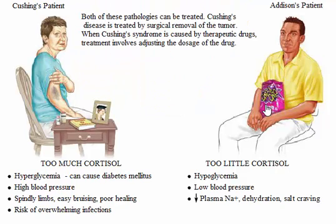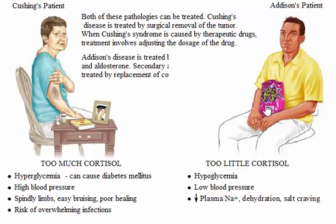Both of these pathologies can be treated. Cushing's disease is treated by surgical removal of the tumor. When Cushing's syndrome is caused by therapeutic drugs such as prednisone, treatment involves adjusting the dosage of the drug. Addison's disease is treated by replacement of cortisol and aldosterone. Secondary adrenal insufficiency is treated by replacement of cortisol.